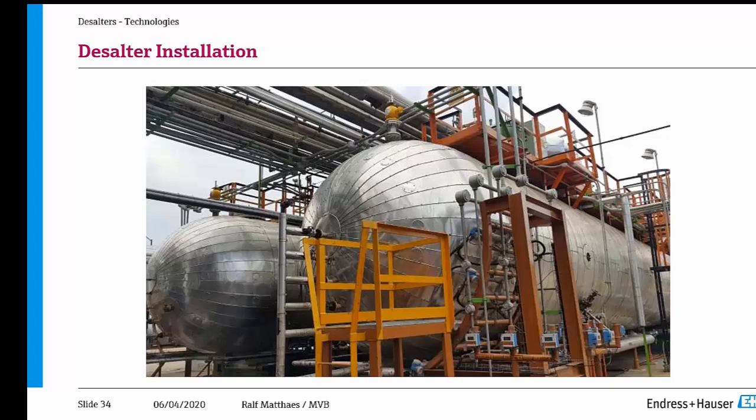Question: how many interfaces can be measured with guided wave radar technology? Just one — it's only possible to see one interface, for instance between oil and water. We can also see the level height of the oil on top as additional information. So that means: water interface, oil level on top, and the layer thickness between water and oil — these are the three pieces of information, but it's only one interface being seen.